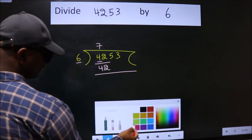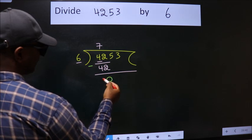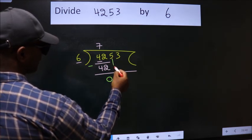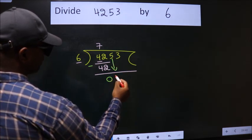Now, we should subtract. We get 0. After this, bring down the beside number. So, 5 down.